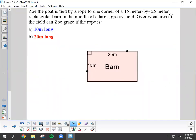Zoe the goat is tied by a rope to one corner of a 15 meter by 25 meter rectangular barn in the middle of a large grassy field. Over what area of the field can Zoe graze if the rope is A, 10 meters long, and B, 20 meters long?